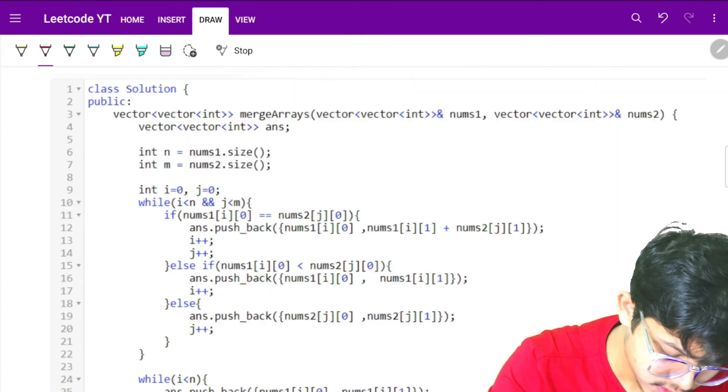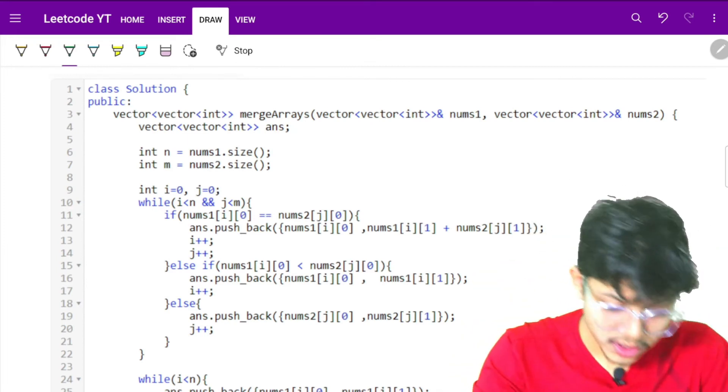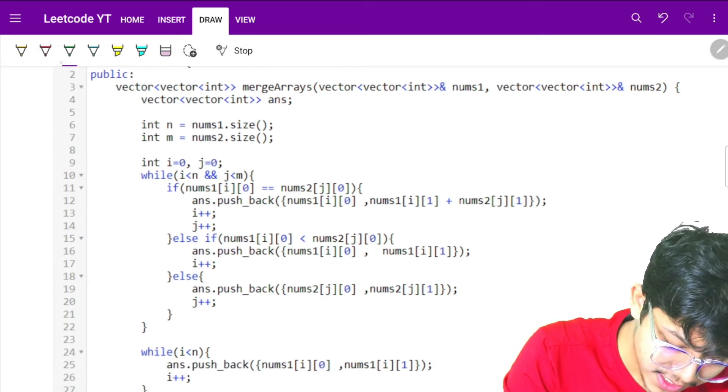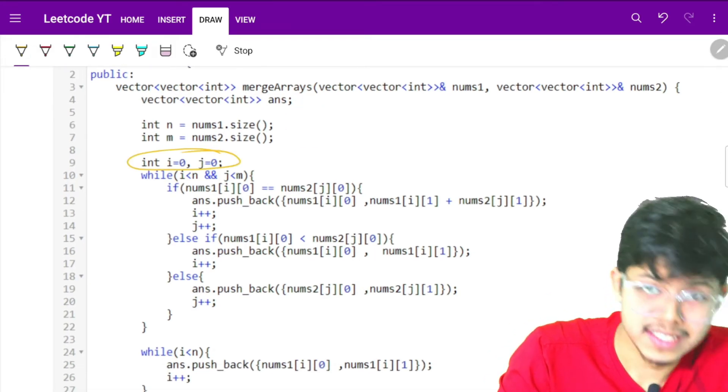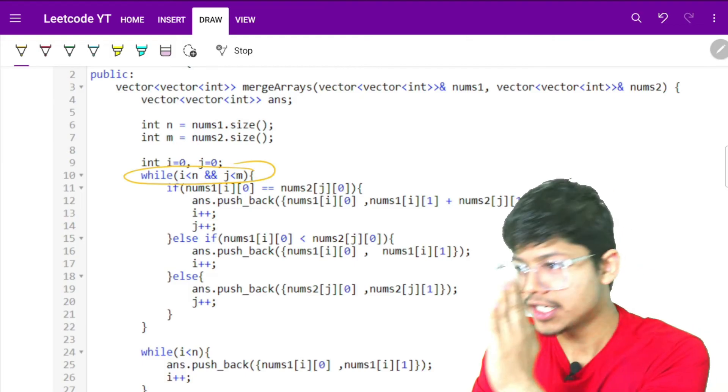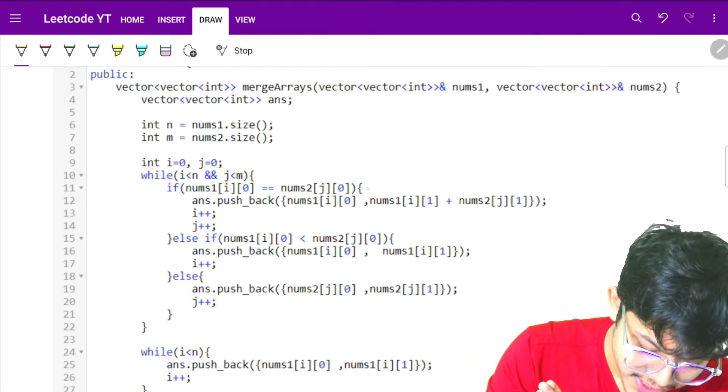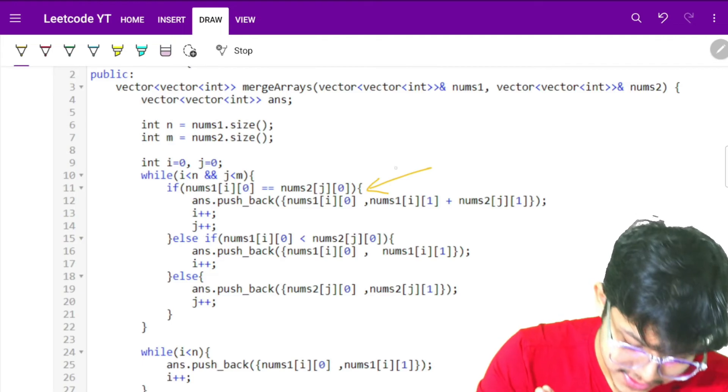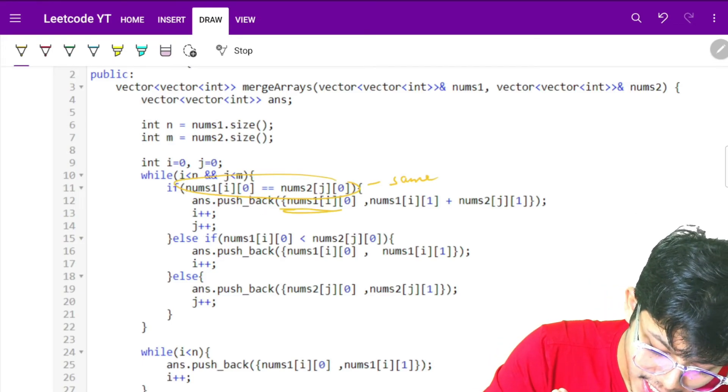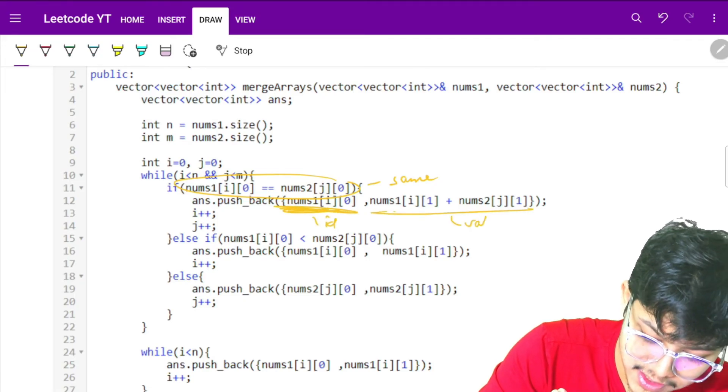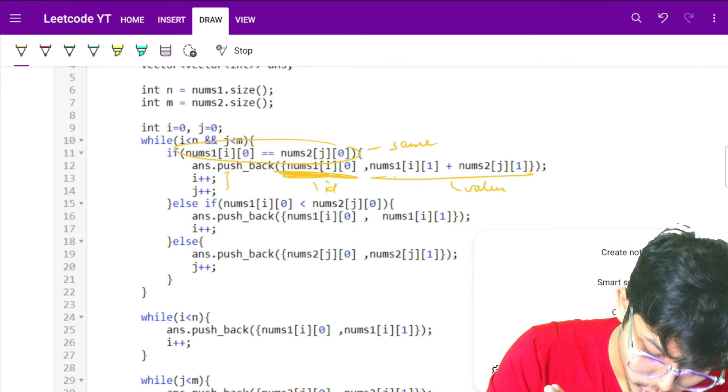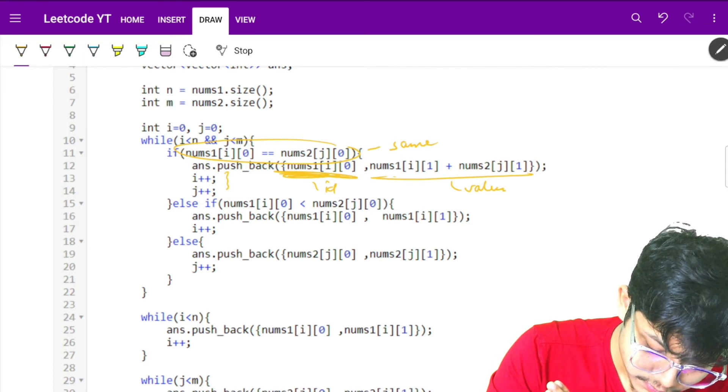Let's quickly see the code. I took an answer array, took my n and m, initialized my i and j pointers by zeros. I move i until I reach n, move j until I reach m. As soon as I move, I compare both i and j IDs. If the IDs are the same, this is the ID and this is the value which is the sum. I increase my i and j.